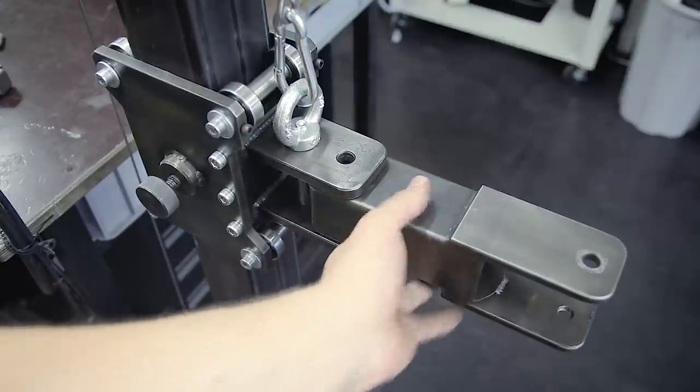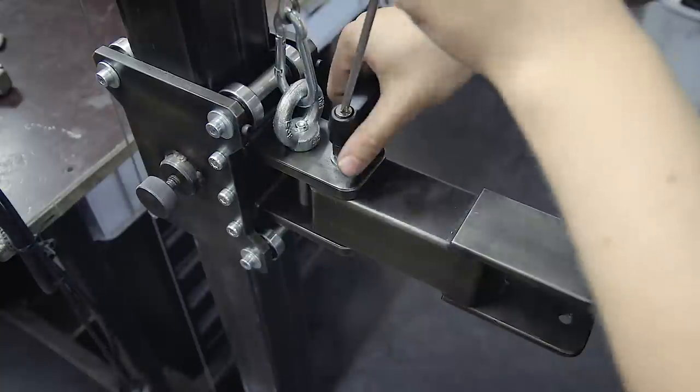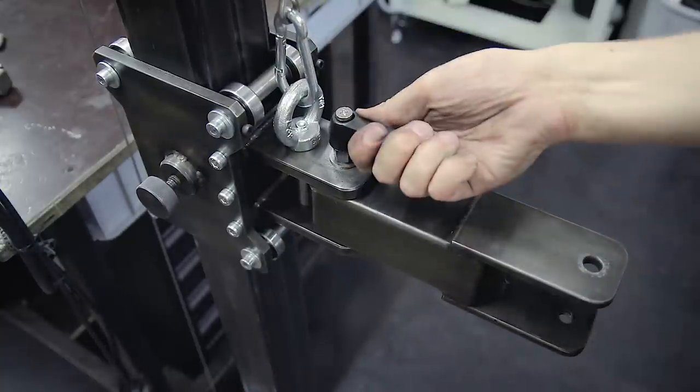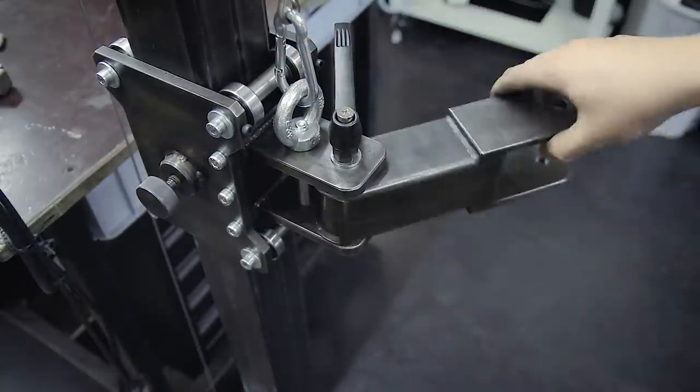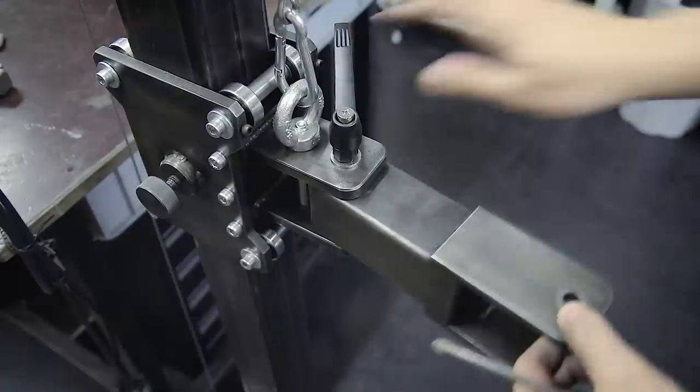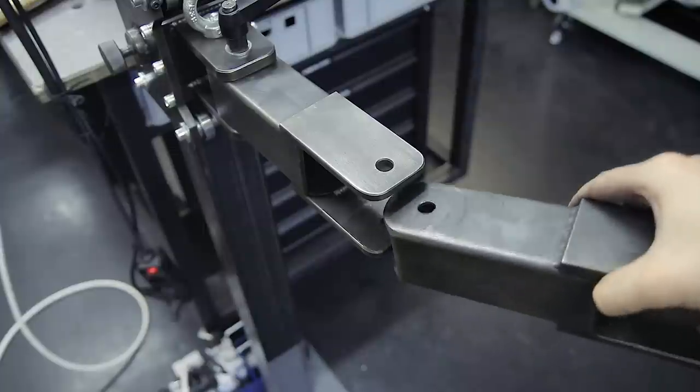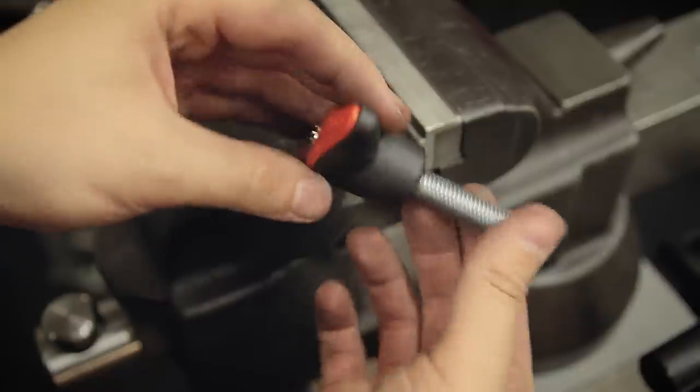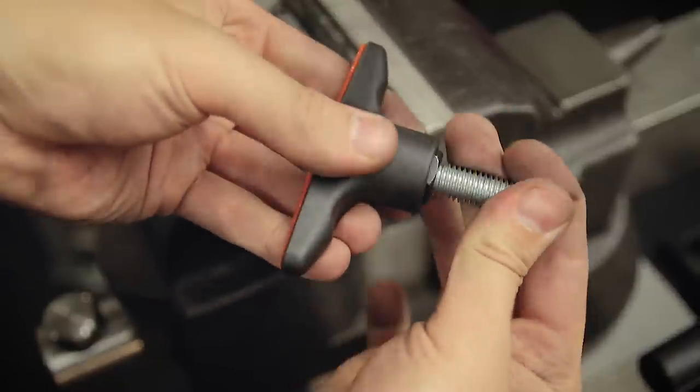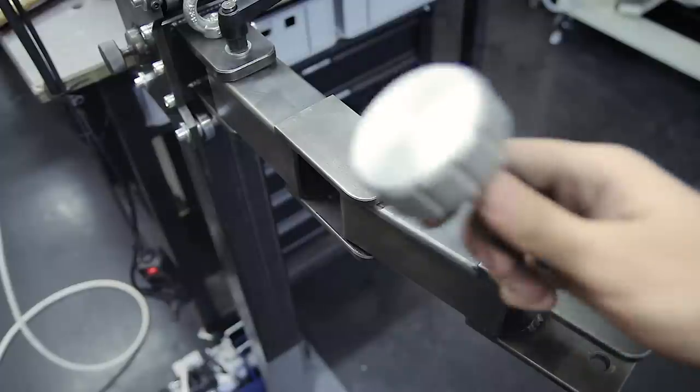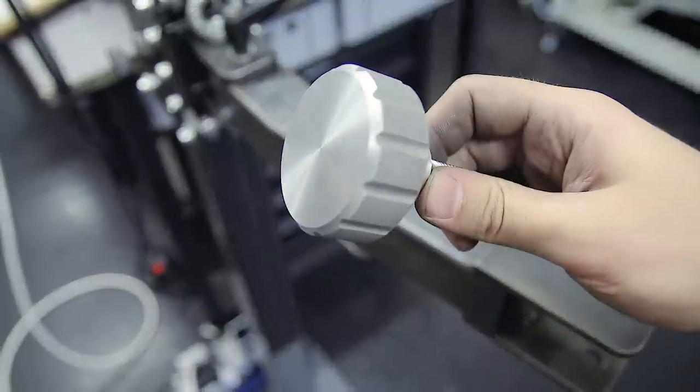I can just screw in these set screws to push the bearings against the column until it's tight, but not too tight. Then by tightening the screws on the side, the whole thing gets locked into position. Now the lifting arm can be installed, and you can actually take out or add arm segments depending on the use case, since all of these connections are the same. Originally I was going to use these plastic handles for the two joints in the middle, but I got a bit carried away and machined these fancy aluminum knobs off-camera.